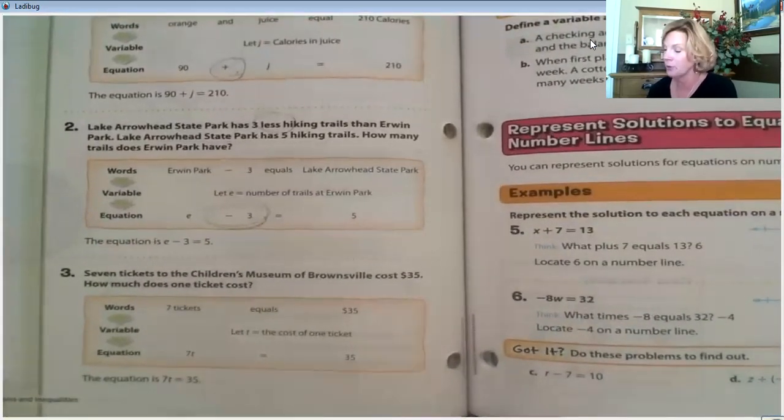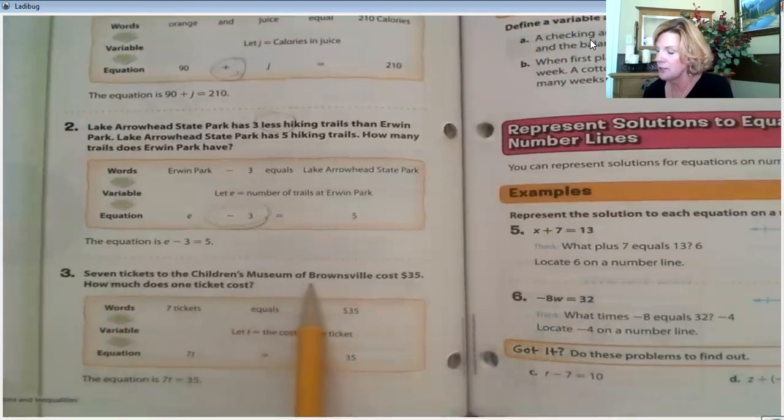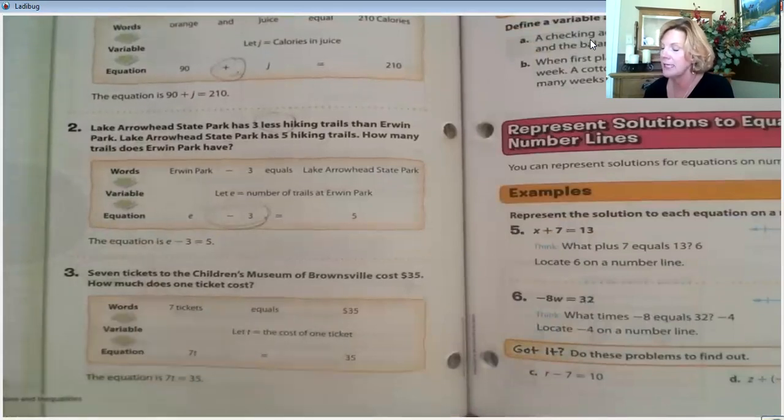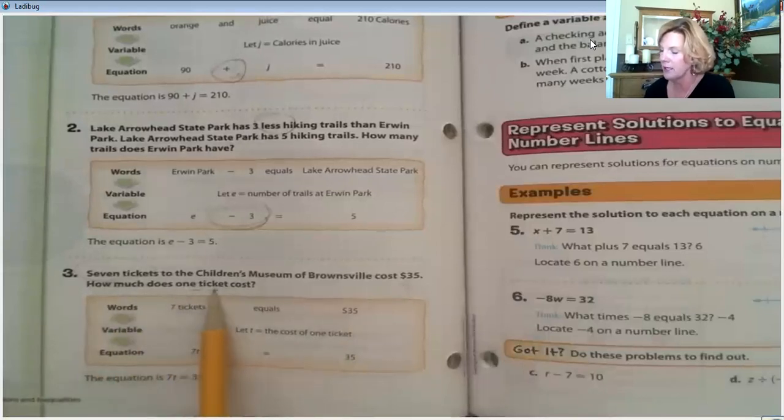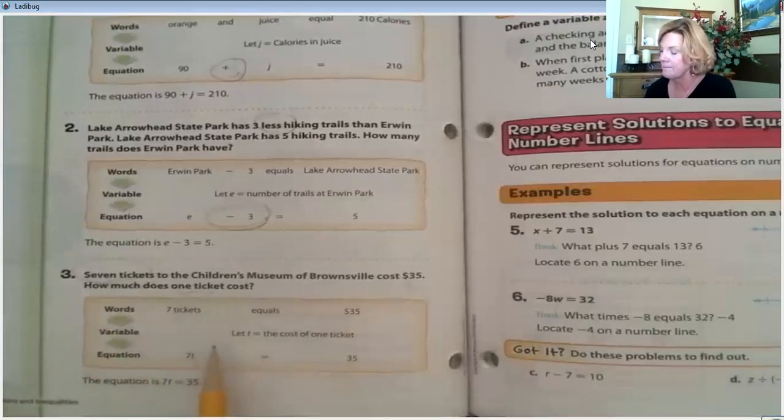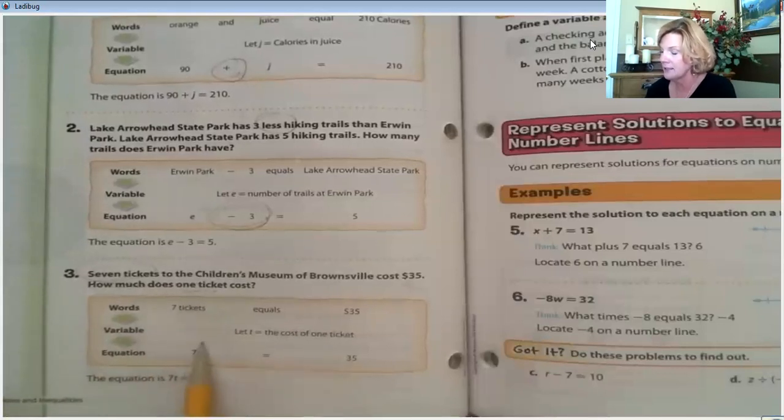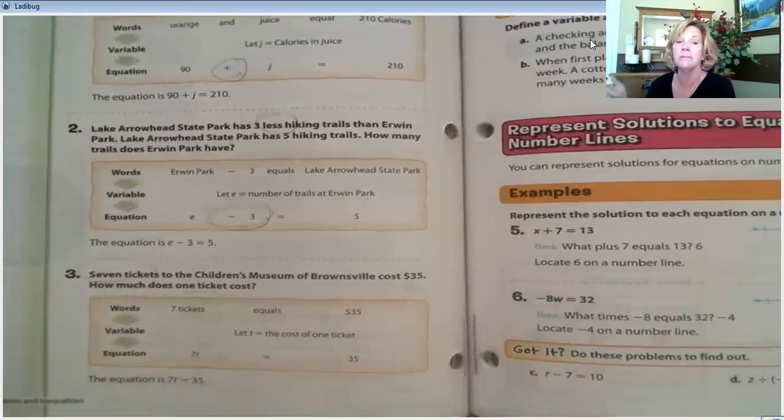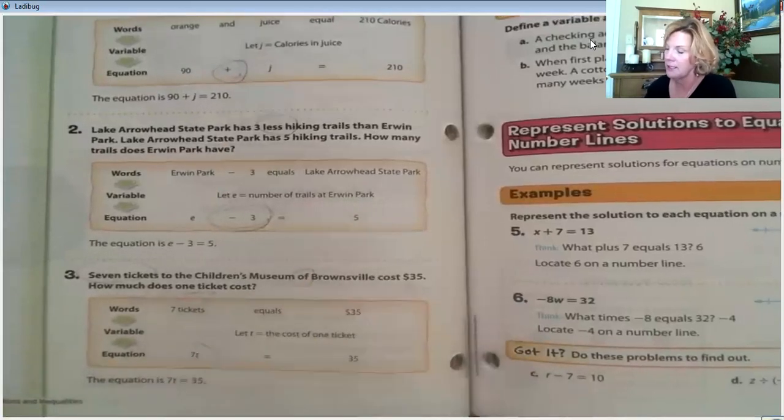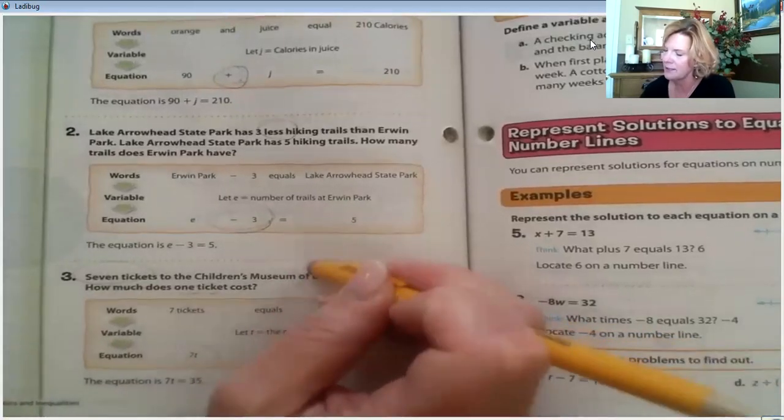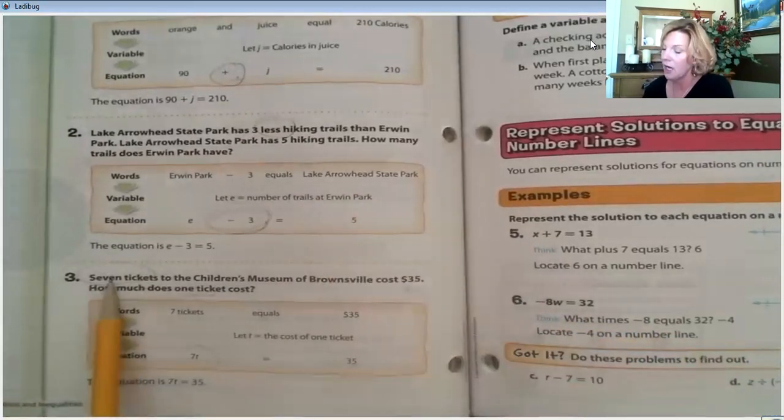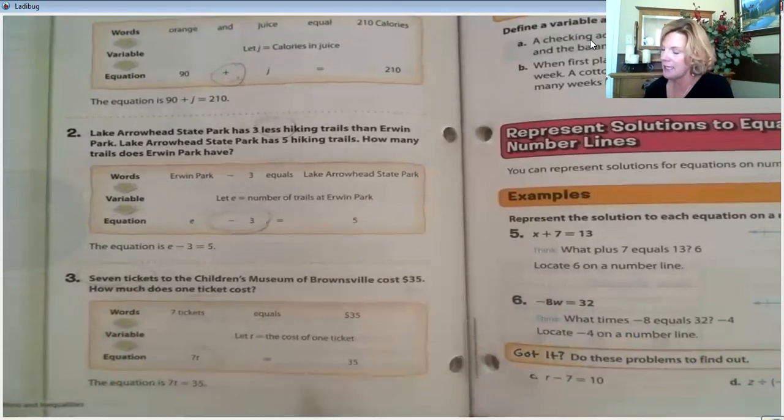Look at example number three. Seven tickets to the Children's Museum of Brownsville cost $35. Seven tickets cost a total of $35. How much does one ticket cost? So, we can write, or they wrote, seven tickets, seven T. You know because seven of them. Of means multiply. Here's our of. No it's not. That's not the right of. Of is implied. Okay. Seven of the tickets. So, seven T equals 35.